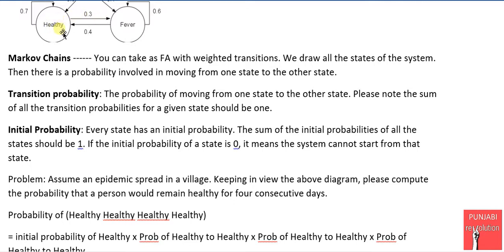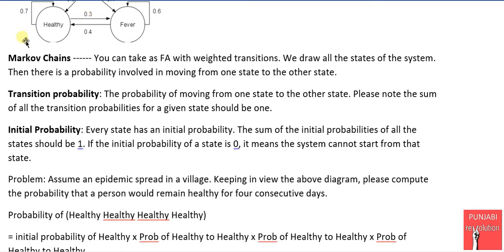The probability of transition from the healthy to the fever state is 0.3, and the probability of transition from the fever to the healthy state is 0.4. These are called the transition probabilities — the probabilities of transitioning from one state to the next. The point to be noted is that the sum of all the transition probabilities from a state is 1.